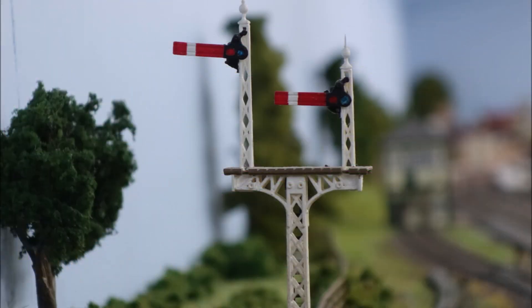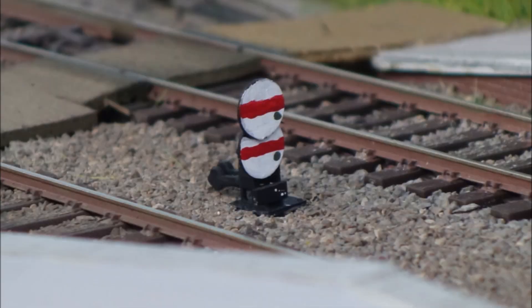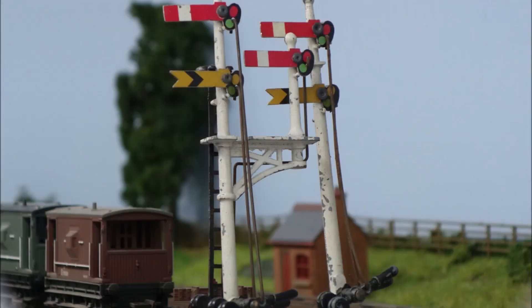And there's a vast array of signals to choose from, from simple semaphore, colour light, ground signals. What do we use and where do we put them? Well let's go right back to basics and let's look at what a block is and that will get us introduced to the sort of signals that we're likely to want.